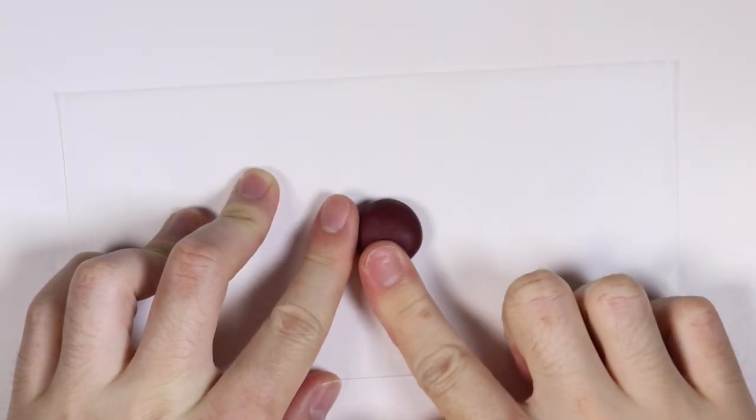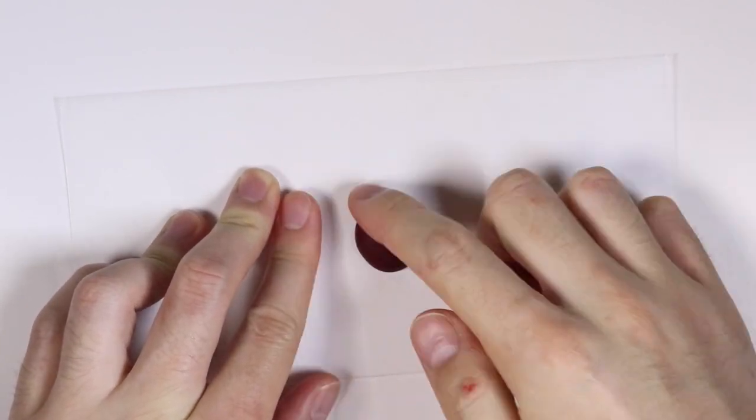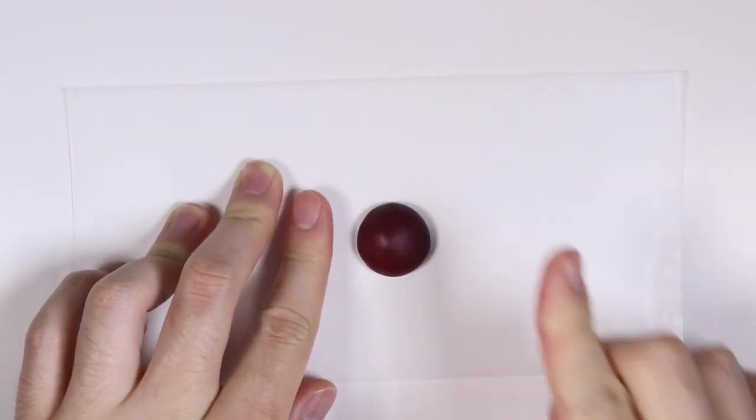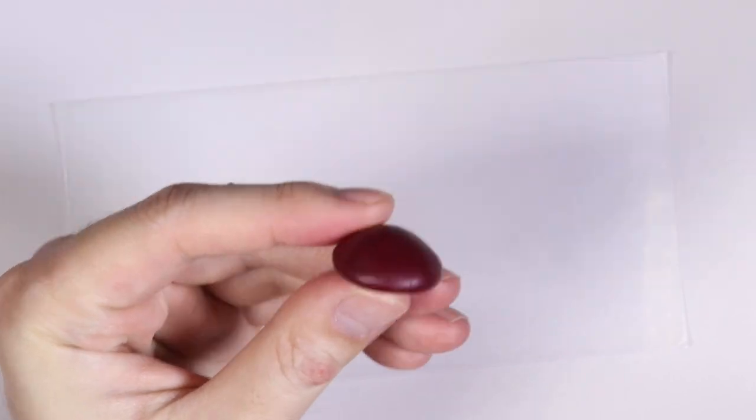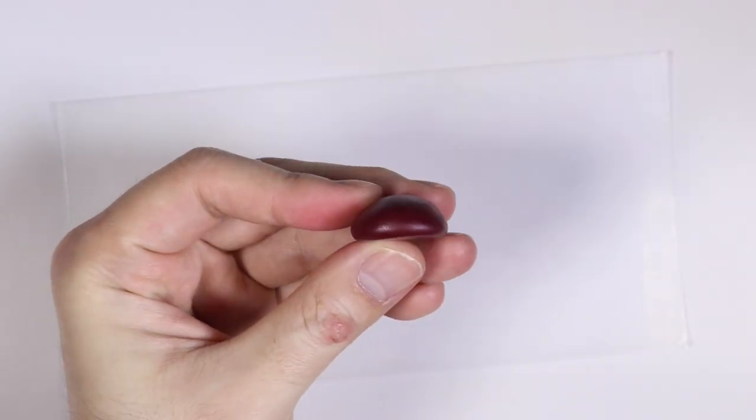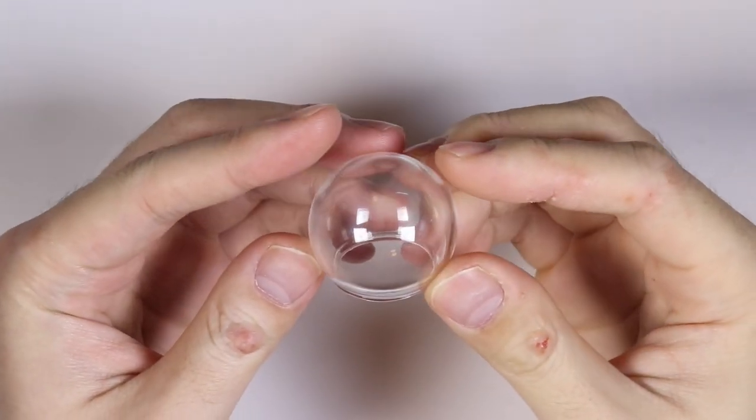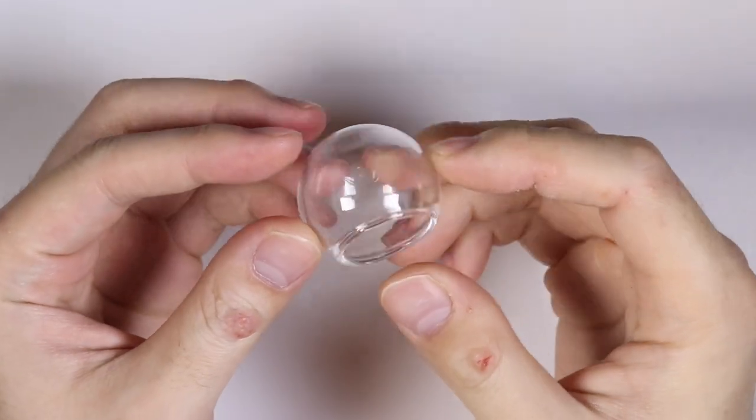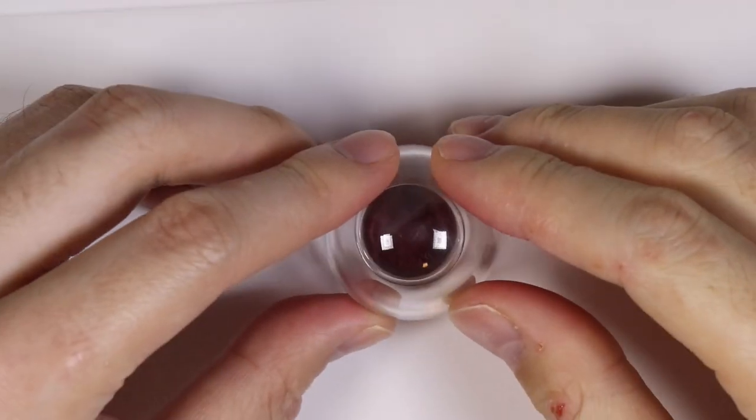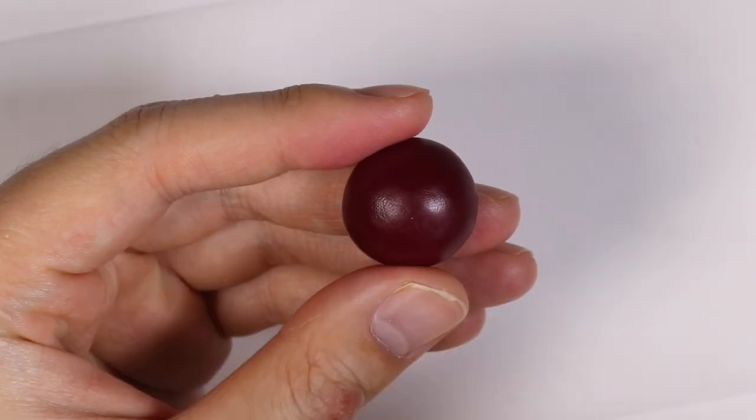So first we're going to make the shell. I'm going to take some brown clay and flatten it out into a dome shape. Here I have my little glass dome and I just want to make sure that the shell goes all the way inside the dome.